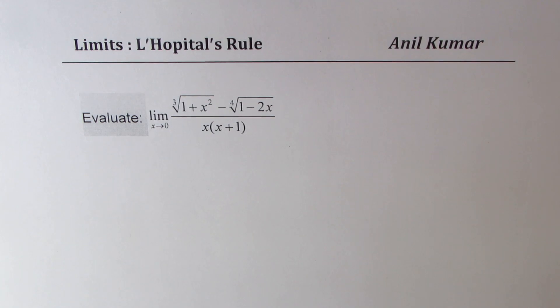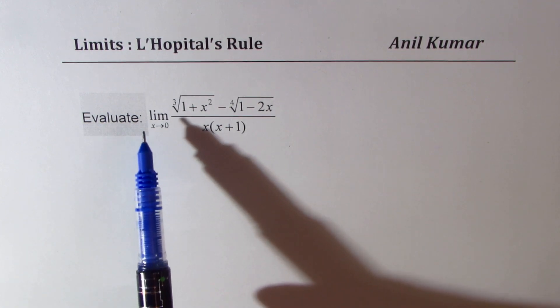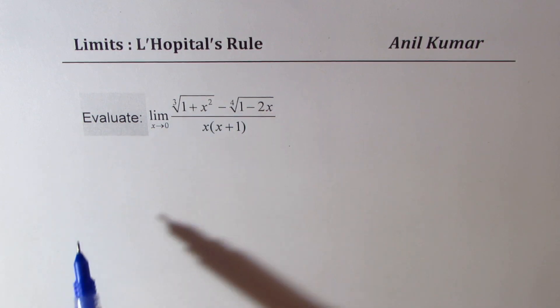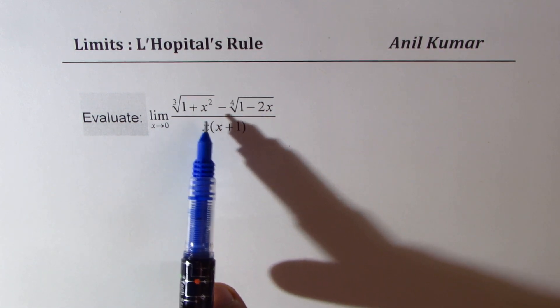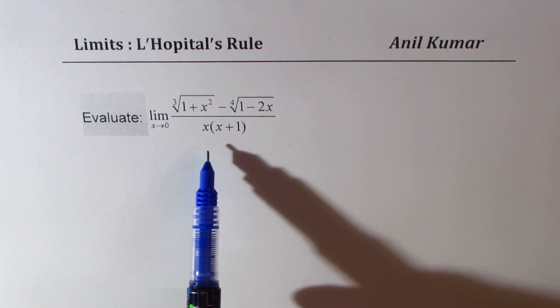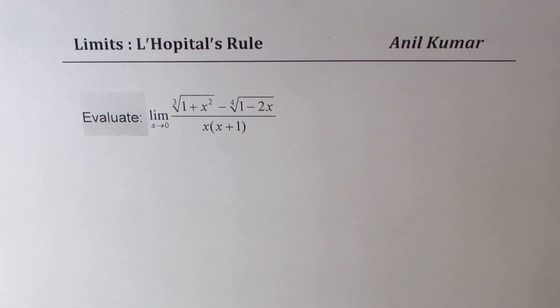I'm Anil Kumar. I'm sharing with you a question from my subscriber who wants to know how to evaluate limit when x approaches 0 for this radical function. It is cube root of 1 plus x squared minus 4th root of 1 minus 2x divided by x times x plus 1.